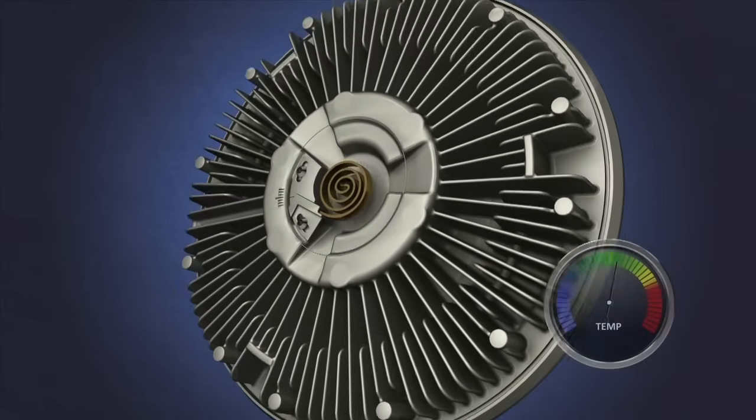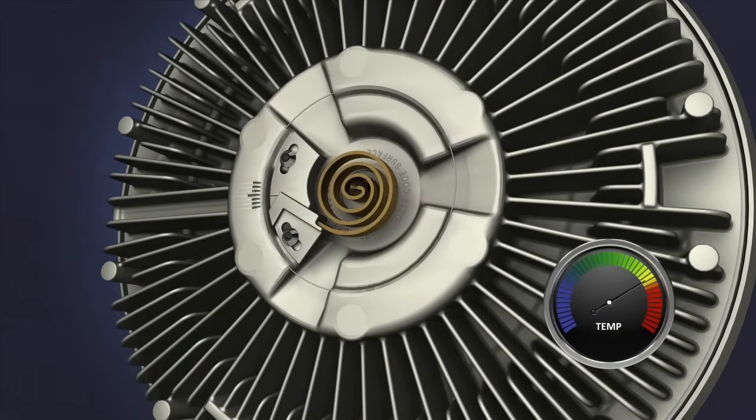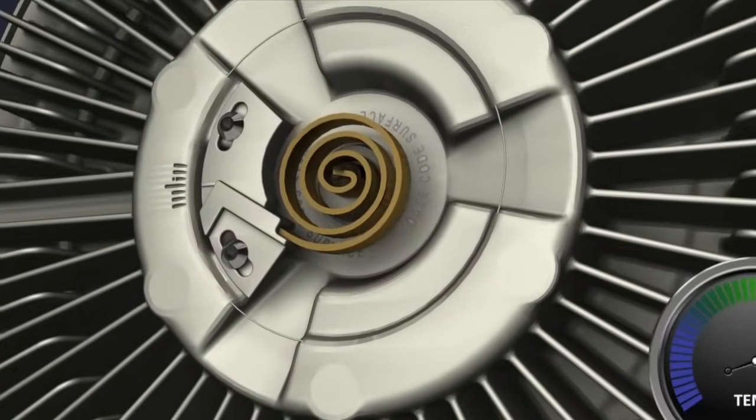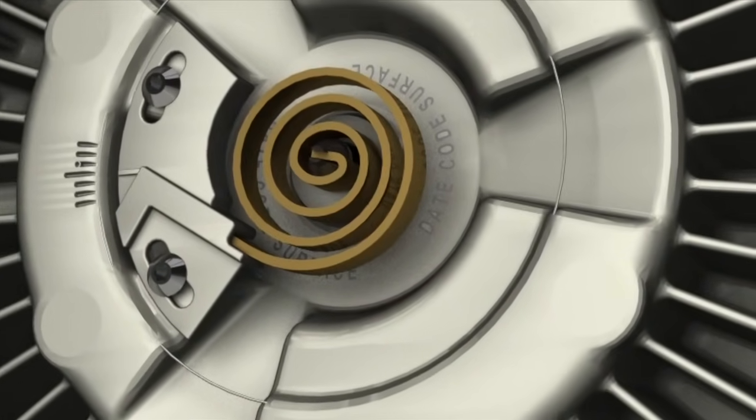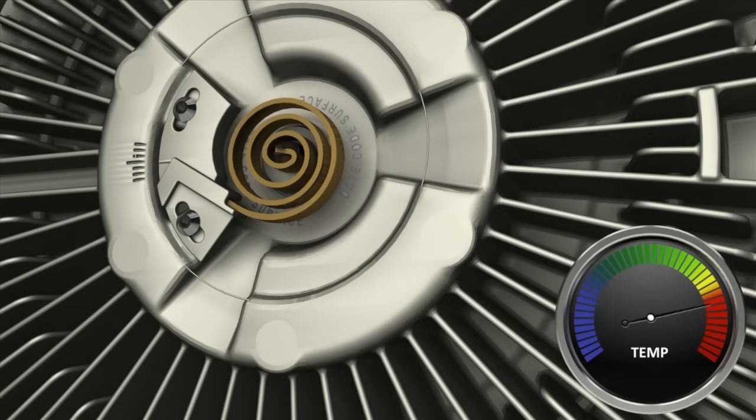At the front of the fan clutch is a bimetallic strip or coil which is made up of two pieces of metal bonded together with drastically different thermo-expansion properties. Small temperature changes equal large dimensional changes in the length of the bimetallic strip.